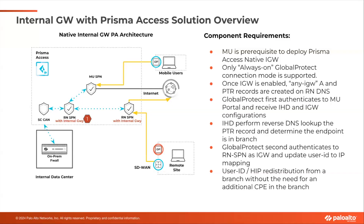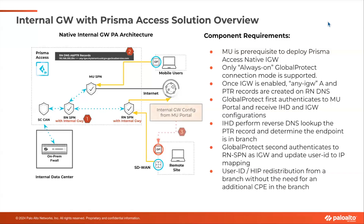With just one or two clicks, you enable the internal gateway feature. Prisma Access will start to maintain the RN DNS records. When a user tries to connect via GP, the first thing GP receives is the internal gateway configuration from the portal. It then performs internal host detection using the Prisma Access managed DNS record, determines it's in the branch, and connects to the RN gateway — since the branch router is already maintaining that tunnel. So GP will no longer create any new tunnel to the RN SPN. All traffic uses the local LAN network, which removes the extra overhead of multiple VPN tunnels. GP sends all traffic via the local SD-WAN router to the RN SPN, allowing us to redistribute user ID and HIP reports.